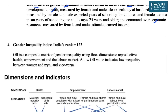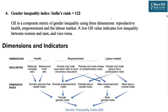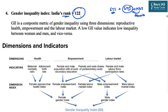Next comes the Gender Inequality Index. An important distinction: gender inequality index and gender development index are different. Gender Development Index is primarily based on the Human Development Index for females. But the Gender Inequality Index is a different index, in which India's rank is 122. The dimensions in GII are different from GDI — it takes three broad dimensions: reproductive health, empowerment, and labor market. A low GII value indicates low inequality between women and men, which is very important and often causes confusion in prelims.